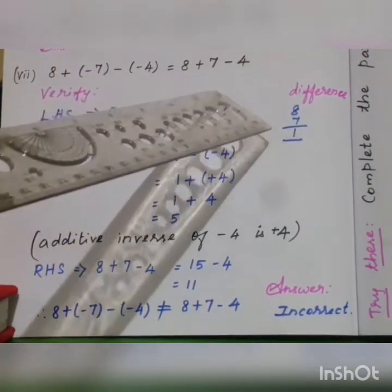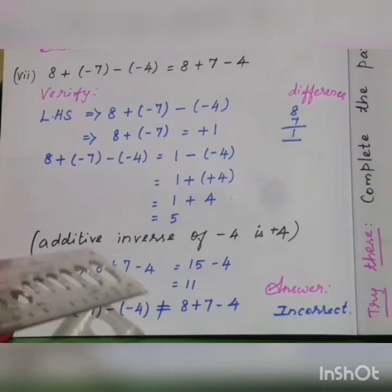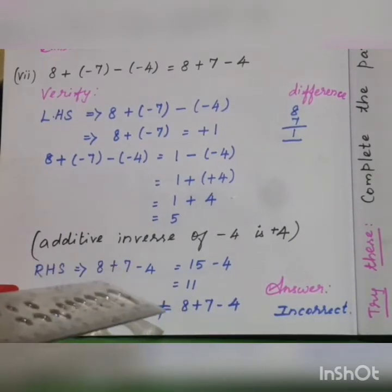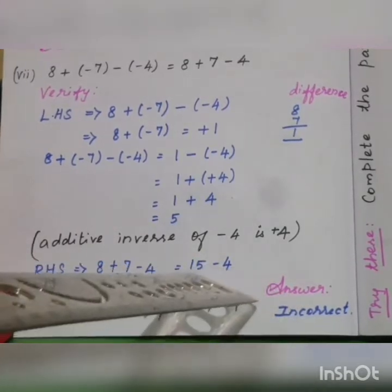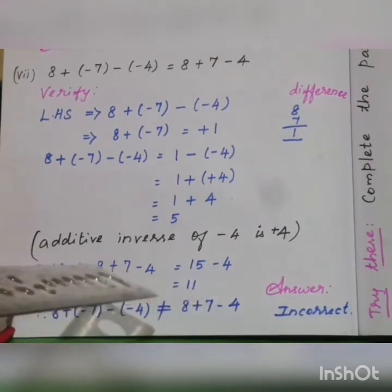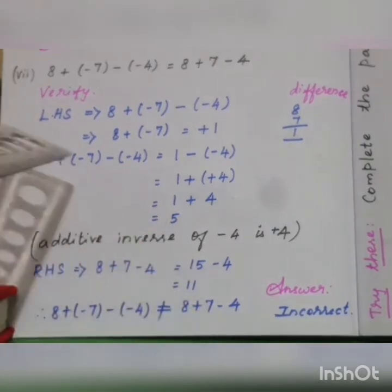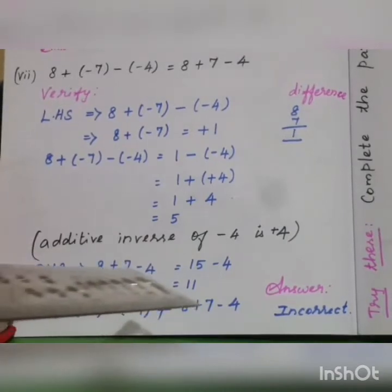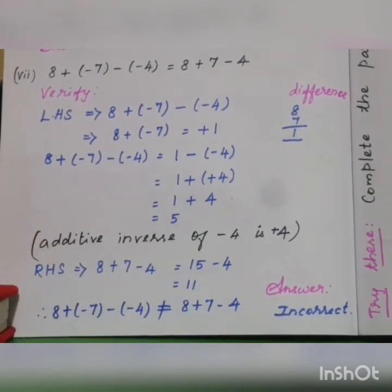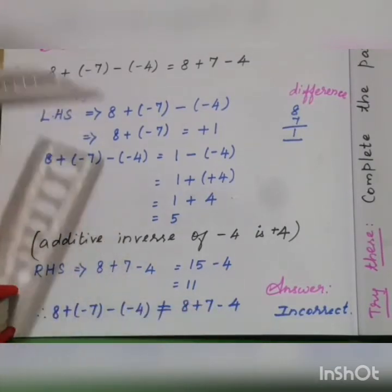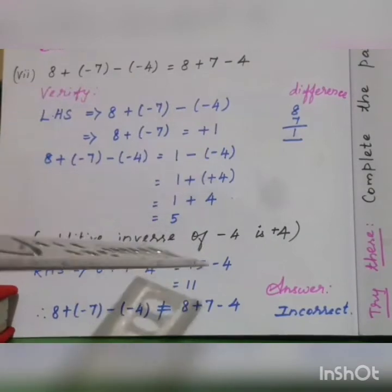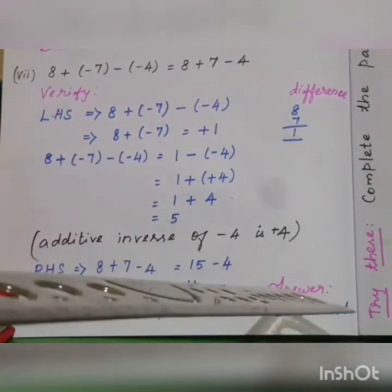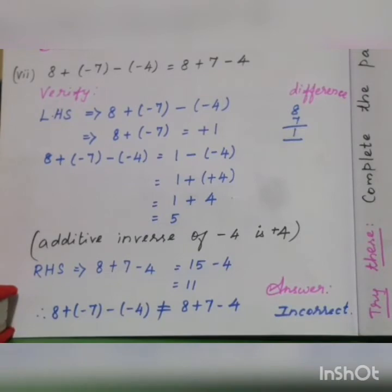Now move to the right hand side: 8 plus 7 minus 4. First add the first two: 8 plus 7 is 15 minus 4. Answer is 11. Left hand side answer is 5, right hand side answer is 11 — they are not equal. The statement claims they are equal, but our answer is not equal. So the answer is incorrect.